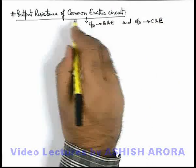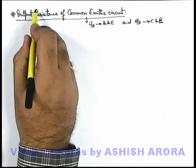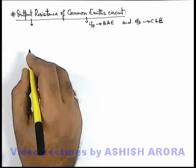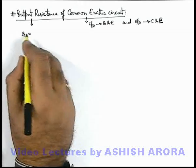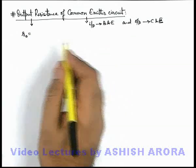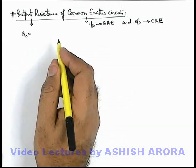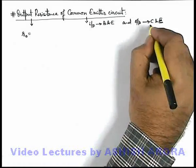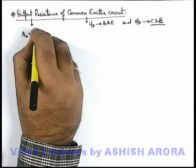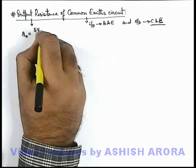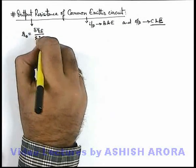So when we talk about the output resistance, certainly, as being a p-n junction, output resistance will be a dynamic resistance which will be given by the ratio of small variation in output voltage to corresponding small variation in output current. That is, for collector and emitter, output resistance for a common emitter circuit can be written as delta V_CE upon delta I_C.